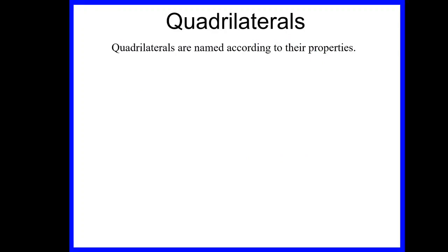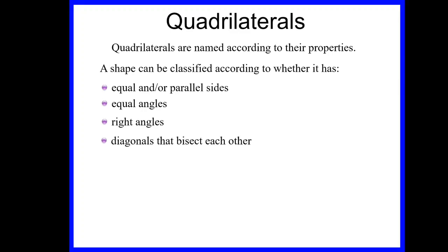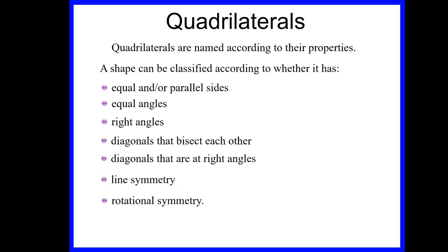We're now going to move on to look at quadrilaterals. Quadrilaterals are named according to the different properties they possess — there are quite a lot. Shapes are classified according to things like equal and/or parallel sides, equal angles, right angles, diagonals that bisect each other — where bisect means to split equally into two — diagonals that are at right angles meeting at 90 degrees, lines of symmetry, and rotational symmetry. The one we're going to look at today is a parallelogram.